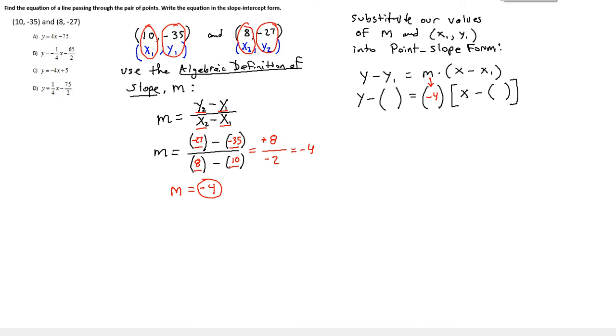If I keep things in different colors for now, here comes x1. X1 was 10 from our point. Y1 is the y-coordinate. We're using the x and y-coordinates from this point, x1 and y1. Negative 35.